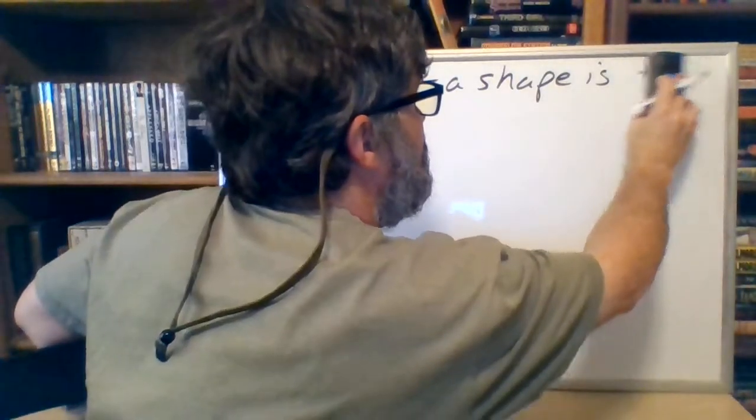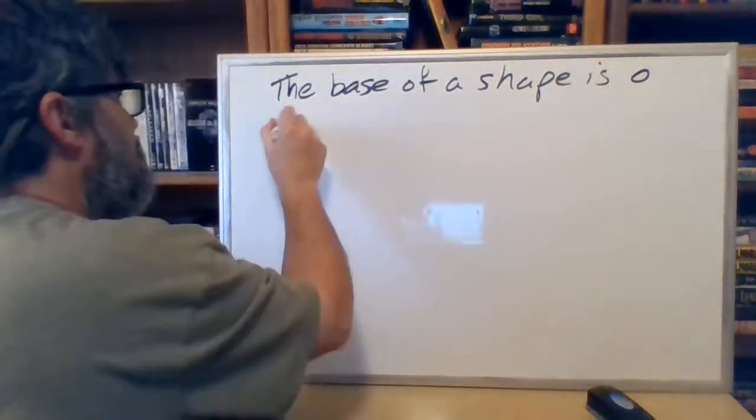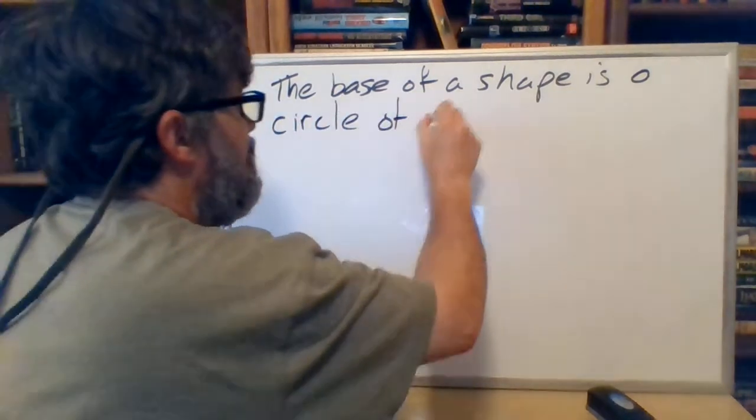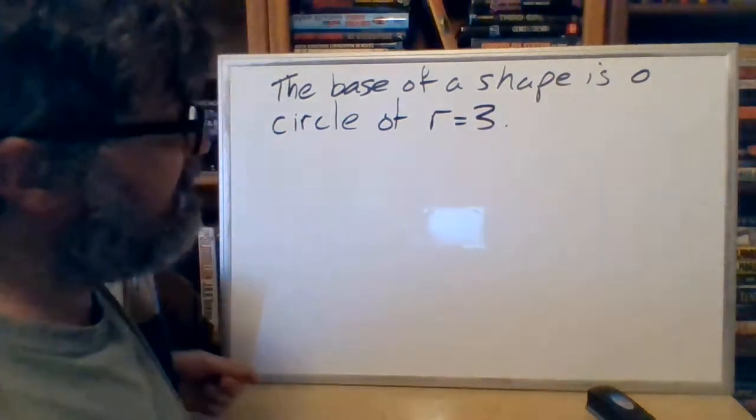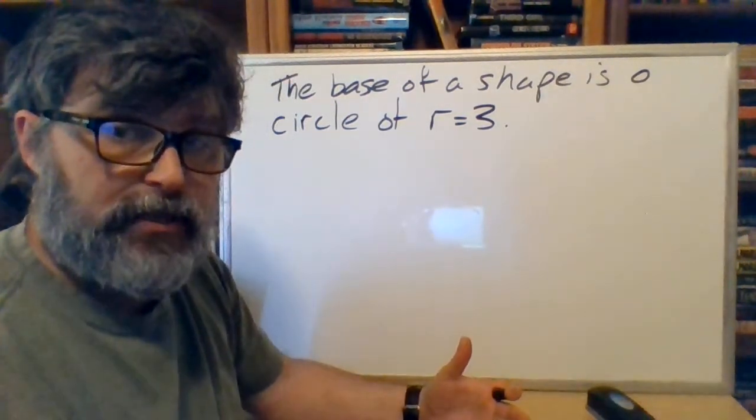Let's make it a bigger circle. This is a circle of radius three.